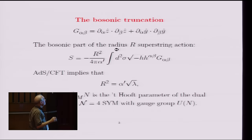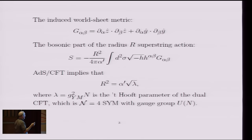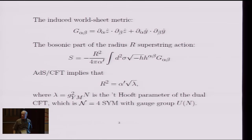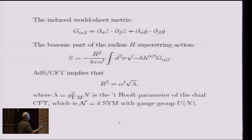Now, when you consider a string moving in this geometry, you take the coordinates Z and Y. Z describes the sphere, and Y describes the AdS. We take them to be functions of the world sheet coordinates, and we use the pullback to define the world sheet metric G_alpha_beta as the induced metric on the world volume.